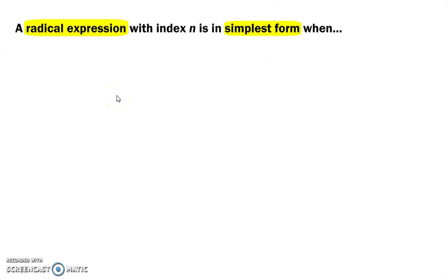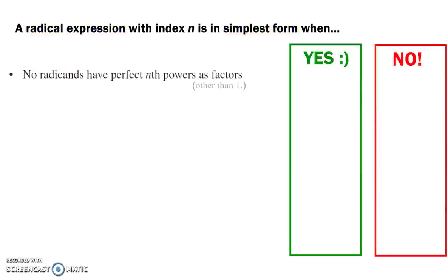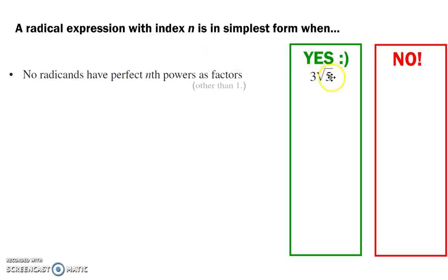A radical expression with index n is in simplest form when no radicands — the radicand is what's underneath the radical sign — have perfect n-th powers as factors. So if it's a square root, you can't have a perfect square underneath it. 5 is under a square root here; it's not a perfect square, so that is in simplest form.